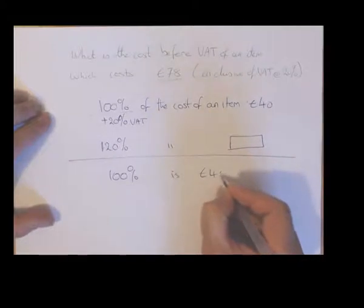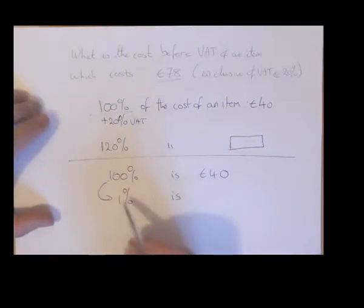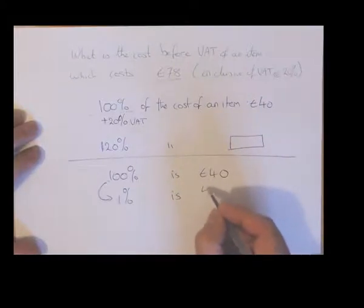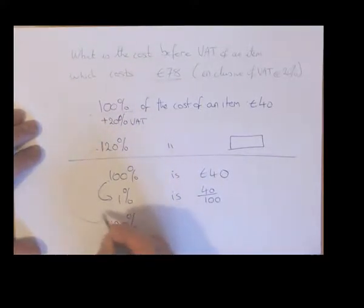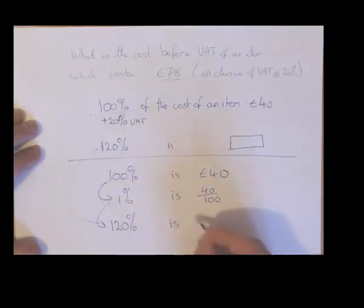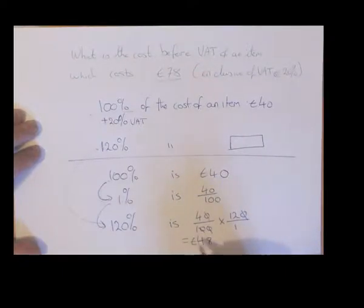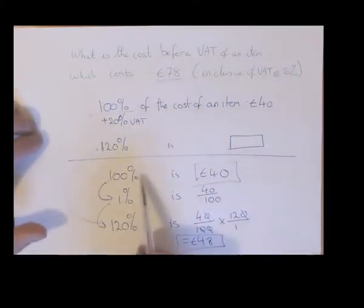We said 100% is 40 euro. Using the unitary method, we said 1% is — well, to go from 100% to 1% you're making it 100 times smaller, so you do the same to the right hand side. Then to go from 1% to 120% you're making it 120 times larger, so you do the same over here. That gives us 48 euro — going from 40 euro to 48 euro using the unitary method.